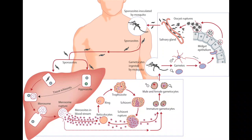Asexual Cycle of Plasmodium vivax in Man. A healthy person acquires infection when a female Anopheles mosquito containing infective stages of parasites in its salivary gland bites him to suck his blood. The mosquito punctures the host skin by its proboscis and first introduces some saliva into the bloodstream. Along with saliva, thousands of sporozoites contained therein are also inoculated.